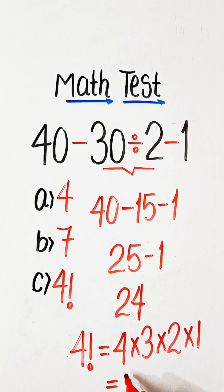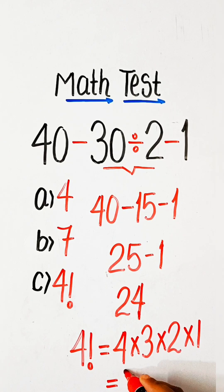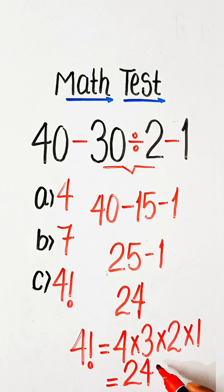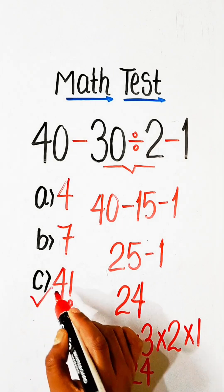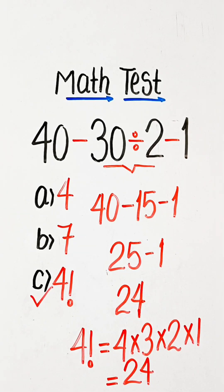After solving this, we get 24. So option C, 4 factorial, will be our correct answer.